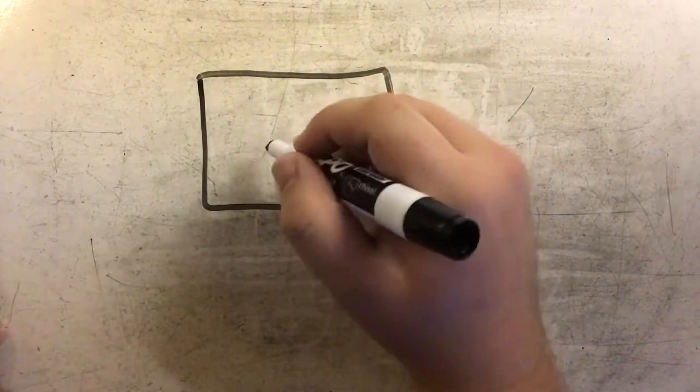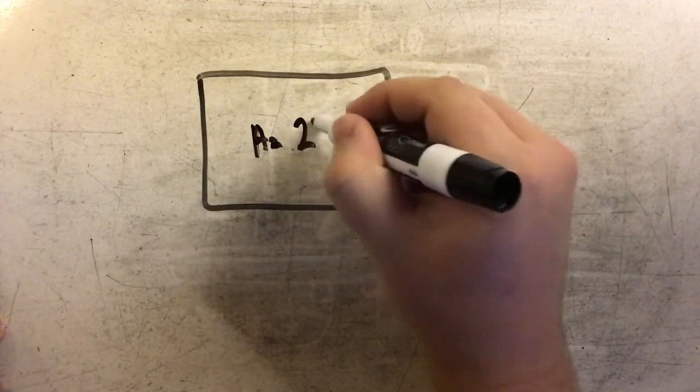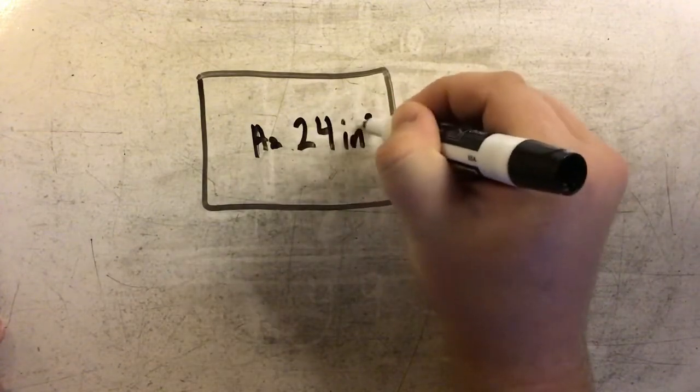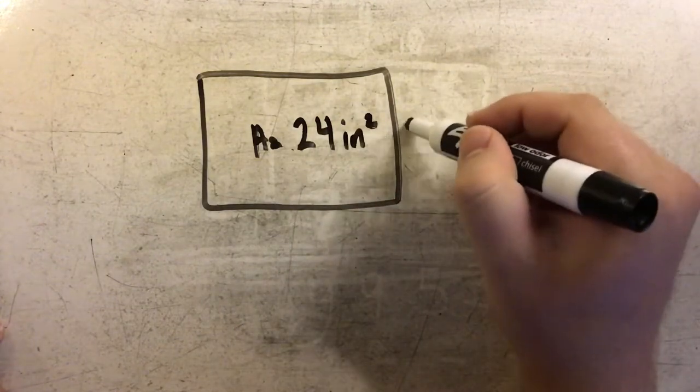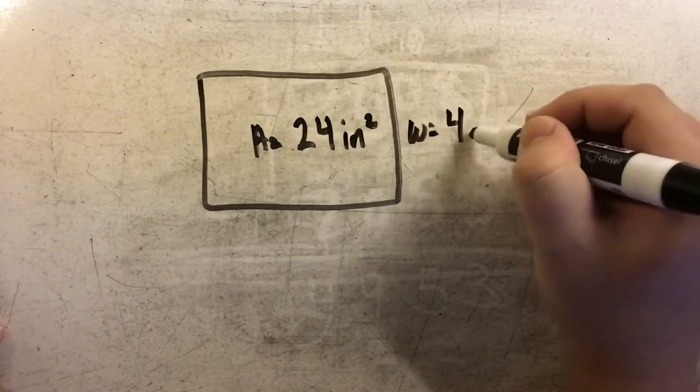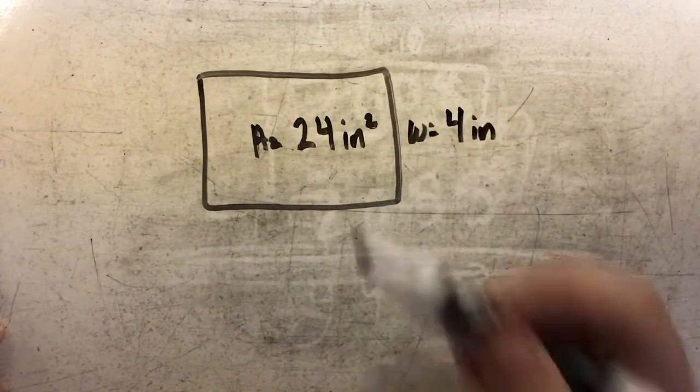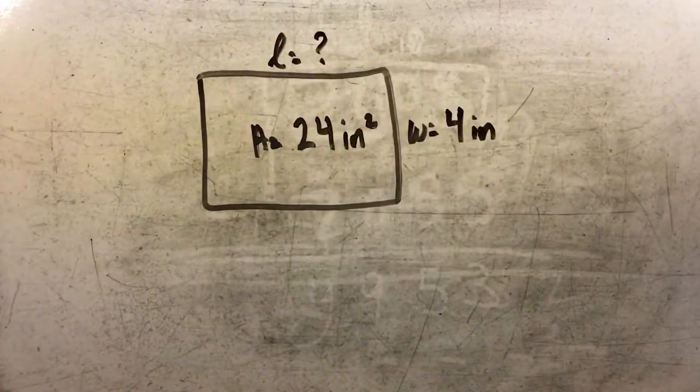In this example, we have a rectangle with an area of 24 square inches. We know that the width is 4 inches, and we want to find the length.